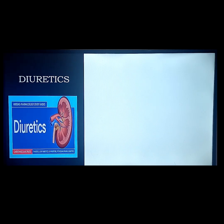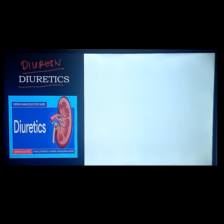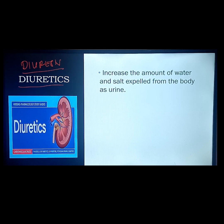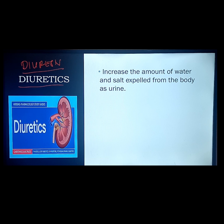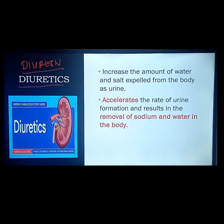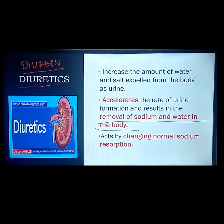Now we proceed to the actual medications. We have diuretics. Diuretics comes from the word diuresis, which means urination. These medications promote urination. The main function is to increase the amount of water and salt expelled from the body. It accelerates urination and results in the removal of sodium and water from the body, especially in cases of excessive accumulation. Diuretics affect normal sodium reabsorption — the effect is focused on changing the absorption and excretion rate of sodium, because sodium absorbs water.